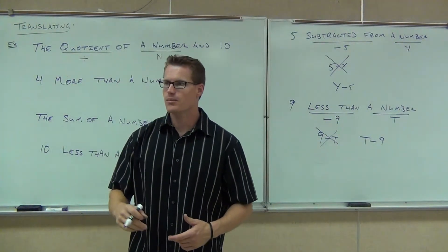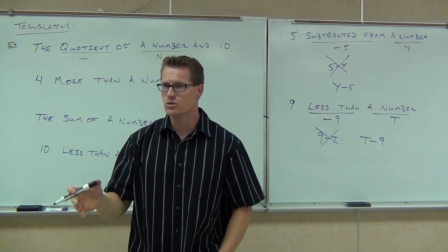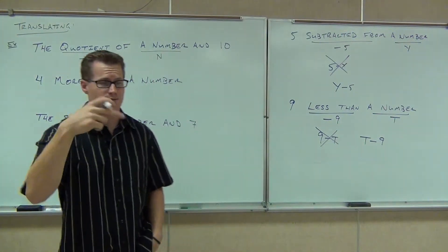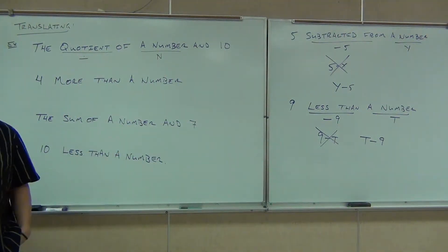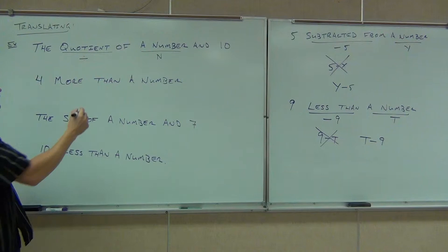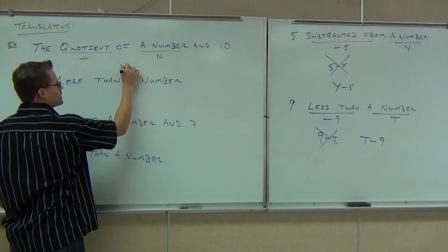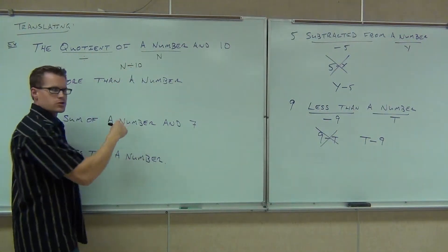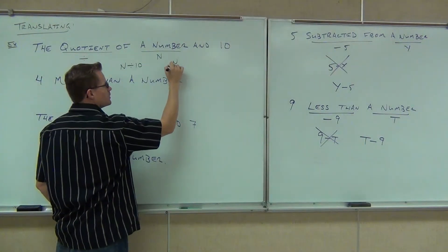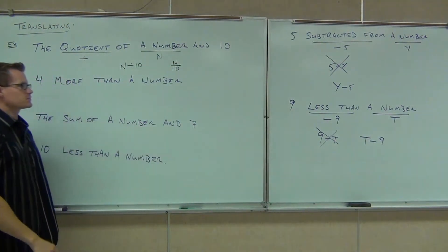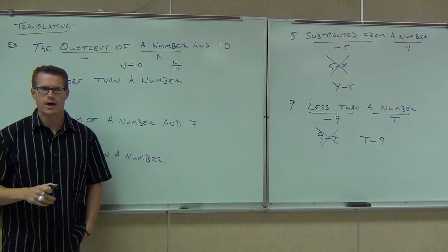Like most of the other sentences do. So the quotient just says the first one divided by the second one. I would like to see you write these as fractions. You can write them as n divided by ten, that's fine, but also translate that back to n over ten. Have both those ways down in your head.